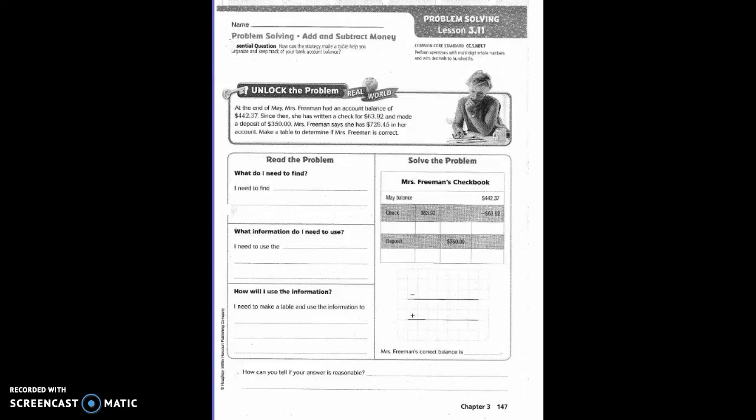Add and Subtract Money. At the end of May, Mrs. Freeman had an account balance of $442.37. Since then, she has written a check for $63.92 and made a deposit of $350. Mrs. Freeman says she has $729.45 in her account. Make a table to determine if Mrs. Freeman is correct.